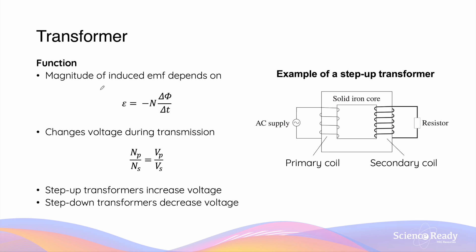Faraday's law also states that the magnitude of the EMF is proportional to the number of turns that the coils contain. Therefore, by changing the number of coil turns in each set — either the primary or the secondary coil — the magnitude of EMF can also be changed. The main function of a transformer is to change the voltage or EMF during transmission of electrical energy. The ratio of the number of turns between the primary and secondary coils is equal to the ratio of the voltage across the primary coil to the voltage across the secondary coil.